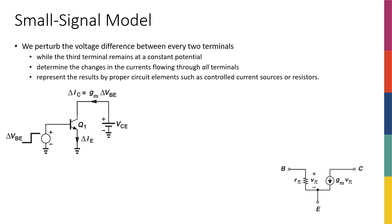Based on our discussions so far, we realized that our transistor has two different and distinct kinds of operation behaviors. It behaves differently when dealing with large signals or DC voltages versus small signals — small perturbations in voltages and currents. For example, when changing the base-emitter voltage, we see an exponential change in the collector current, as long as the changes are large enough.